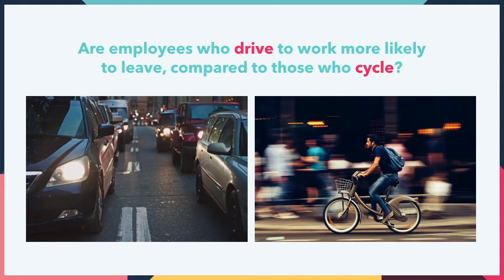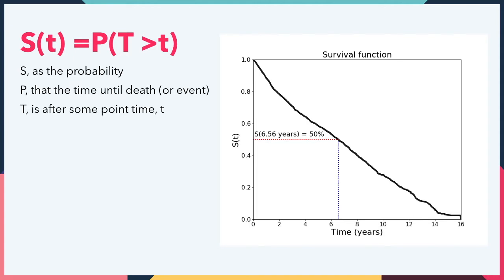To answer this question, let's first denote the survival function as the probability that the time until death or an event is after some point in time, formerly known as described here. The survival function therefore cannot exceed one, it cannot be negative at any point in time, and it does not increase with time.